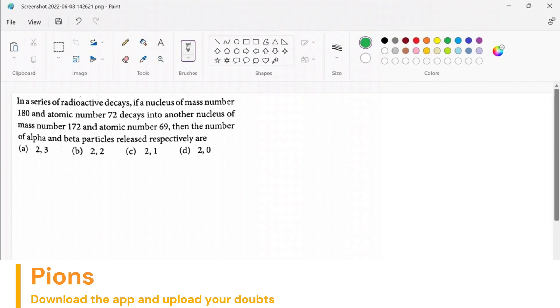Before we go into that, let me first write the reaction. Let's say this is any element X having mass number 180, so let me write here 180 and atomic number 72.